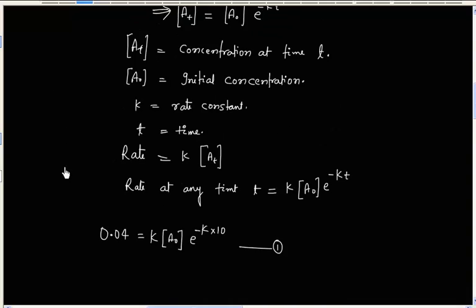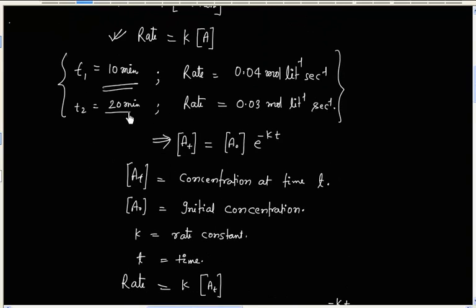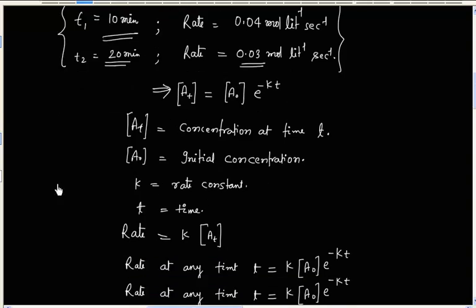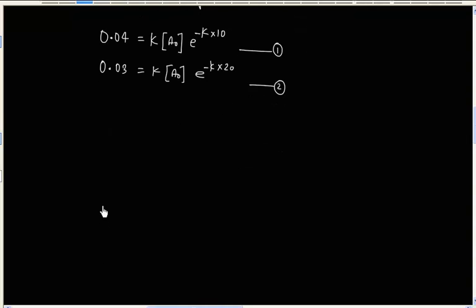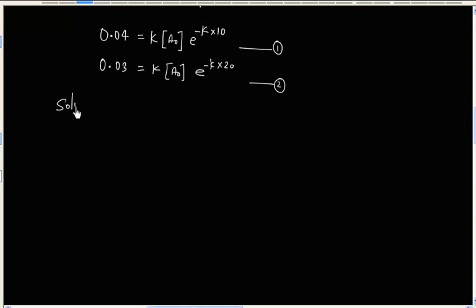Similarly, we can write another equation. When time is 20 minutes, rate is 0.03. Now from these two equations, we can solve for k. So let us divide these two equations.